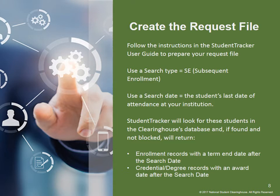In creating your request file, follow the instructions in the Student Tracker user guide to prepare this file — the link will be provided at the end of this presentation. Use the search type in your header row as SE for subsequent enrollment, and the search date should be the student's last date of attendance at your institution. Student Tracker will then look for these students in the Clearinghouse database, and if found and they don't have a FERPA block, we will return enrollment records with the term end date after the search date, and credential and degree records with an award date after the search date.